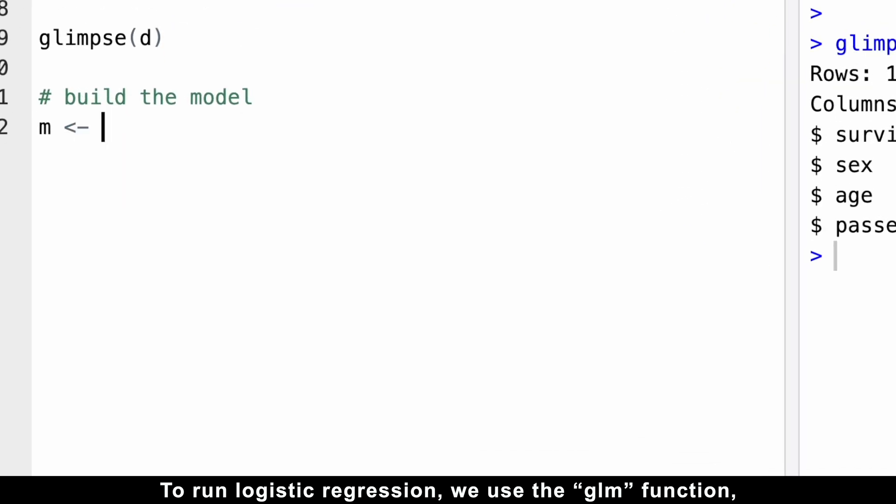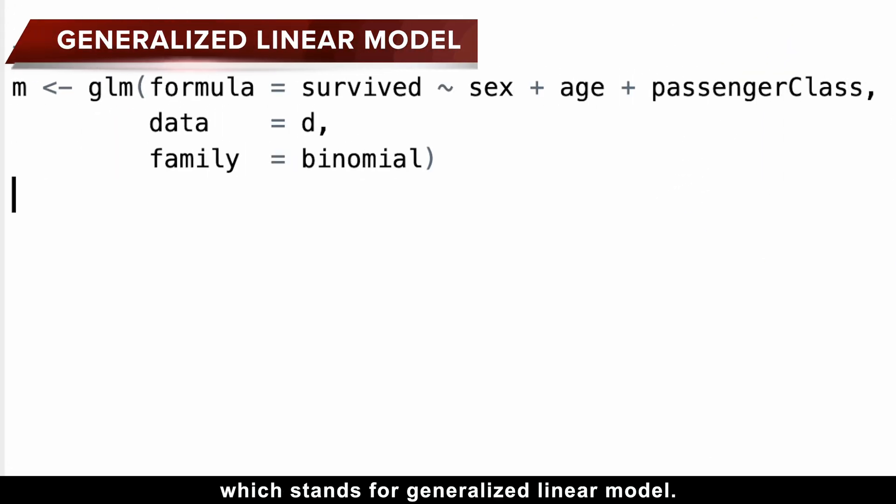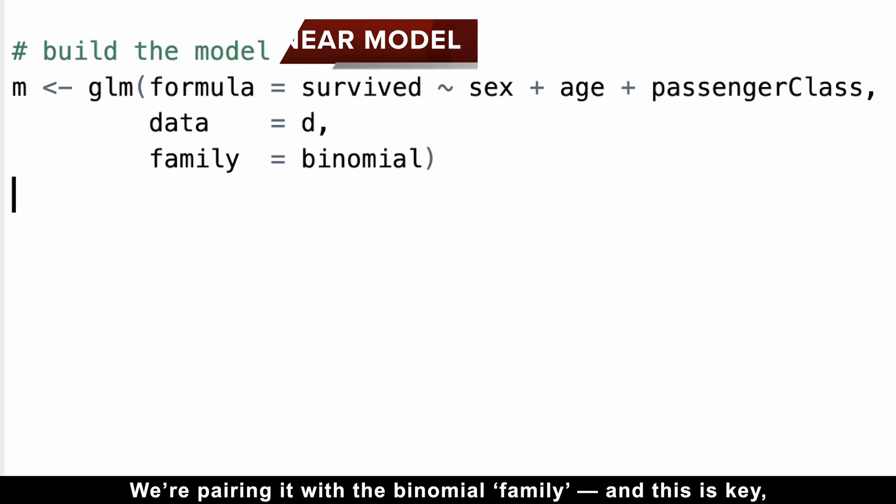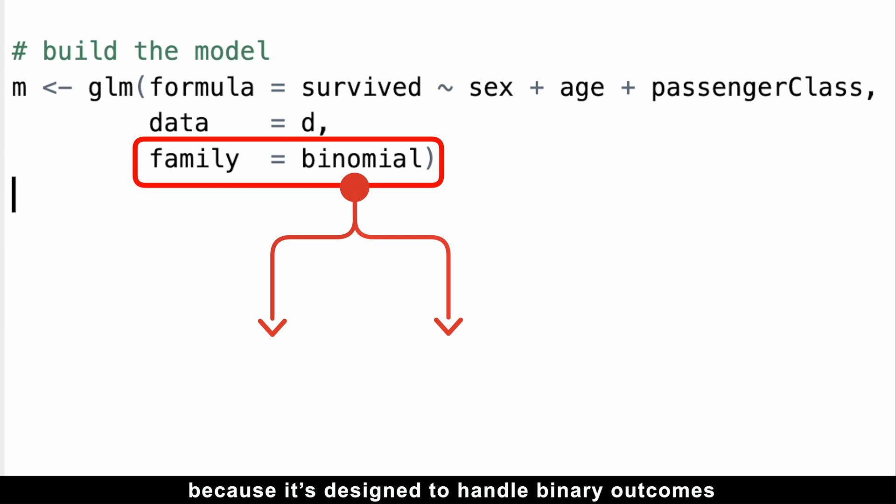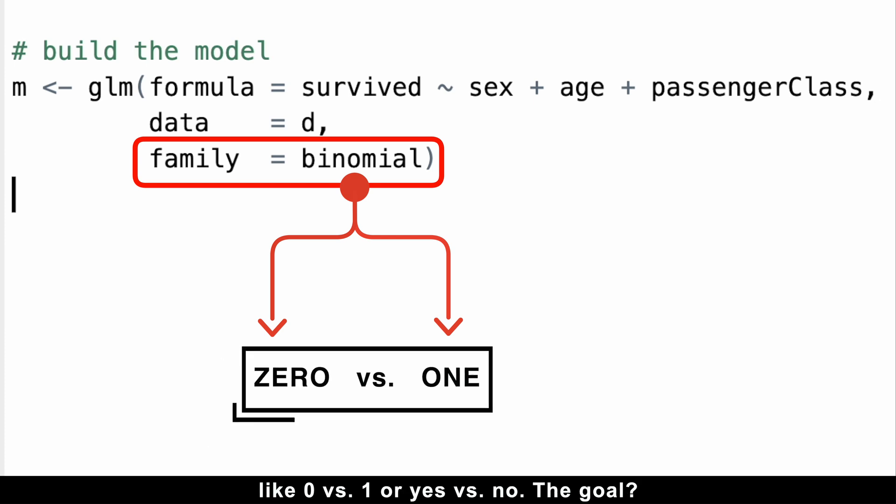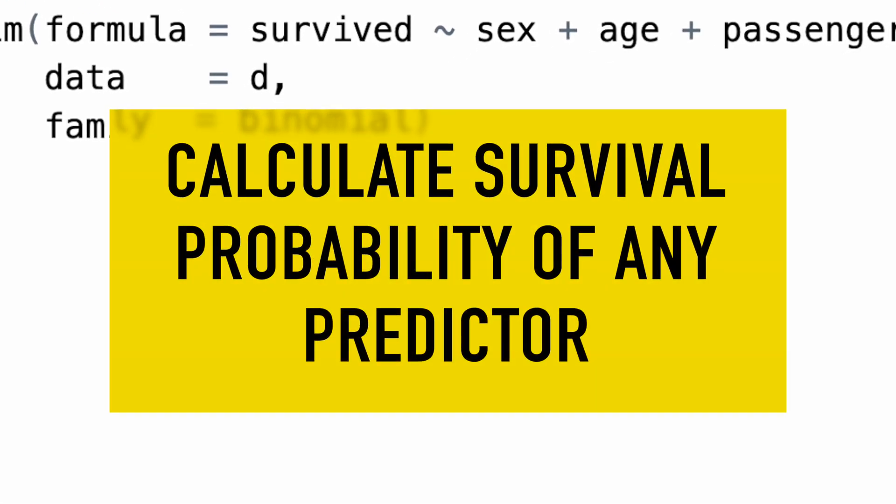To run logistic regression, we use the GLM function, which stands for Generalized Linear Model. We're pairing it with a binomial family, and this is key, because it's designed to handle binary outcomes, like 0 vs 1 or yes vs no. The goal? Calculate survival probability of any predictor.